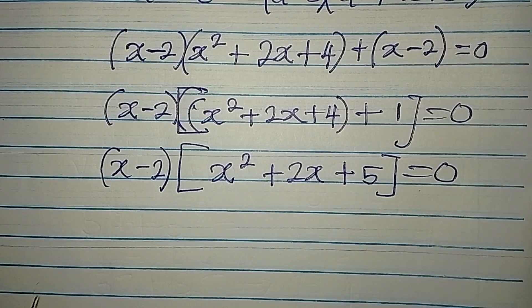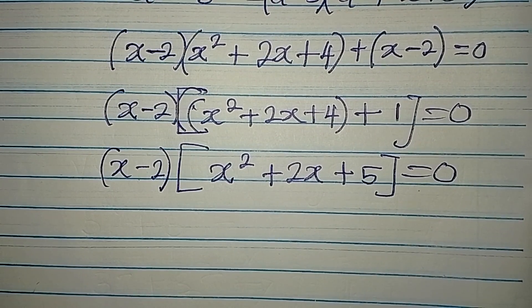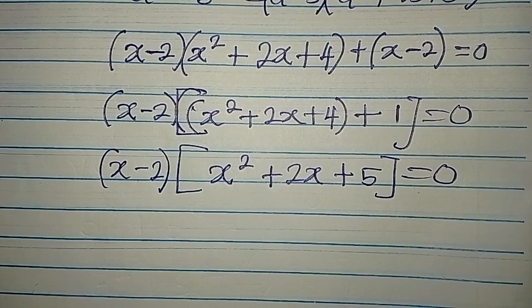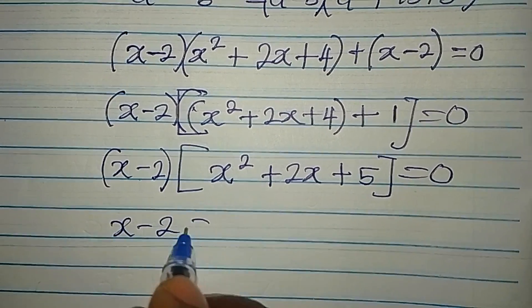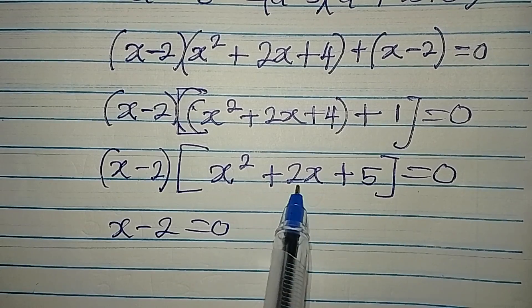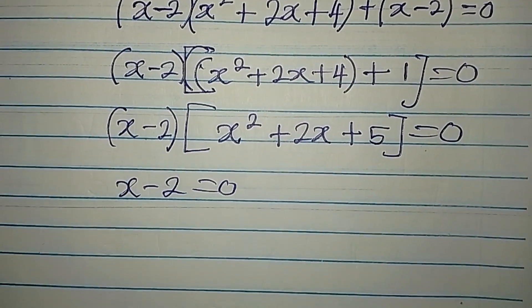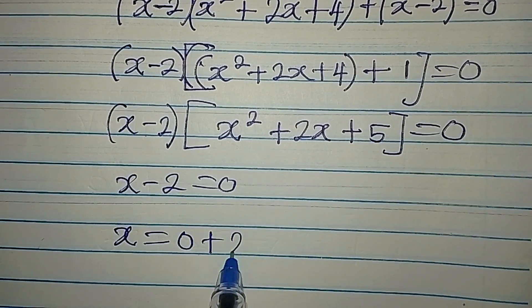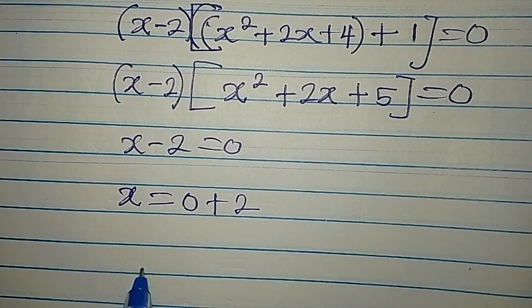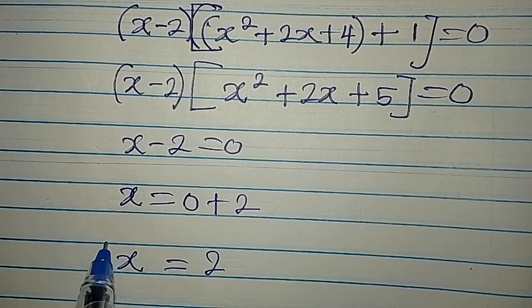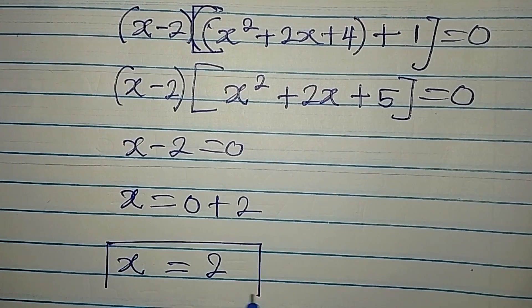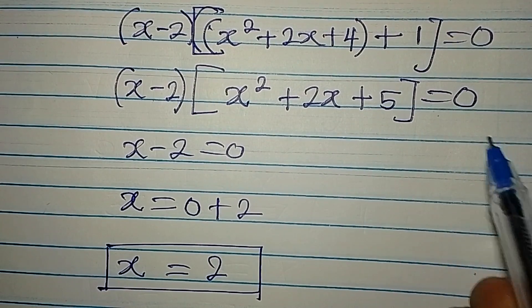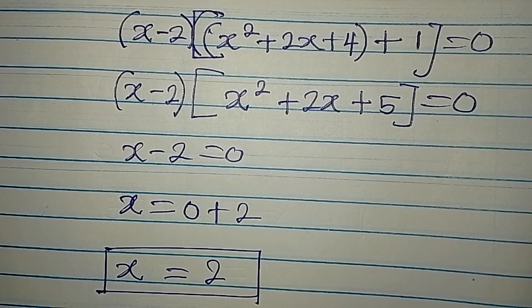We can now conclude that either x minus 2 equals zero, or the quadratic expression x squared plus 2x plus 5 equals zero. From x minus 2 equals zero, our x will be zero plus 2, which means x equals 2. That is one of the solutions. Because we also have this quadratic expression, we equate it to zero and it becomes a quadratic equation.